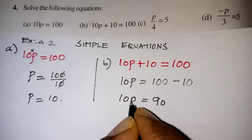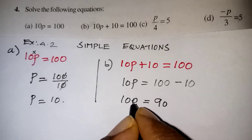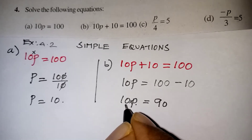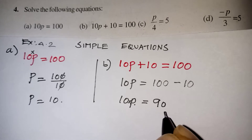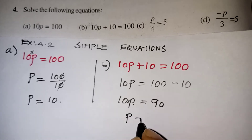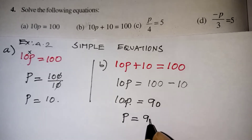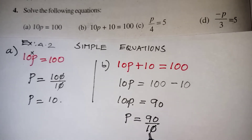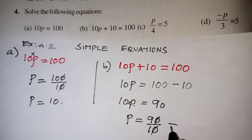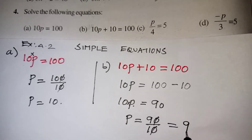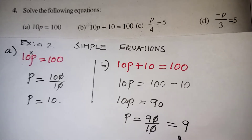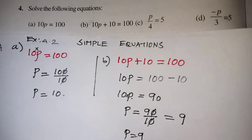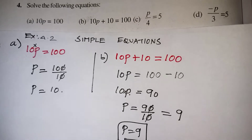Now 10p is equal to 90. Again, between 10 and p there is no sign, that means multiplication. So if you take the multiplication 10 to the other side, that will become division. So p is equal to 90 by 10 — the zeros get cancelled, denominator 1 we can leave it — so p is equal to 9 is your correct answer. We will move on to the next problem now.